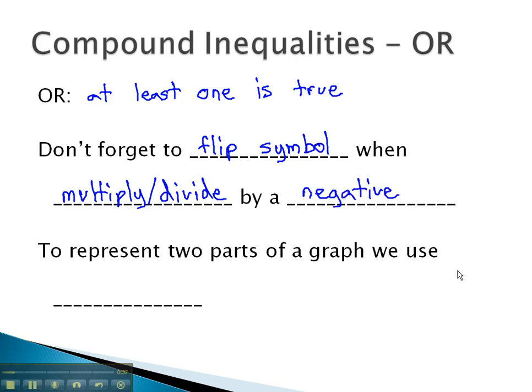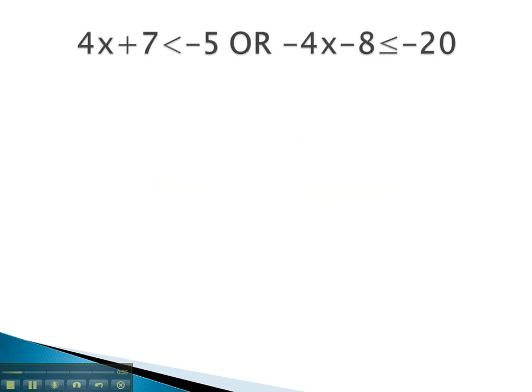As we graph these, we may find we have two parts of a graph because we only need one to be true. To represent two parts of a graph, we use the symbol that looks like a horseshoe, which is read union. Let's take a look at an example where we use that symbol in interval notation.